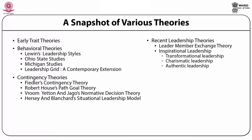In behavioral theories, we will discuss Kurt Lewin's leadership styles, the Ohio State studies, the Michigan studies, and the leadership grid. In the contingency theories, we will discuss Fiedler's contingency theory, Robert House's path-goal theory, Vroom and Yetten's normative decision-making theory, and Hershey and Blanchard's situational leadership model. Some of the recent leadership theories are leader-member exchange theory and inspirational leadership — including transformational, charismatic, and authentic leadership.